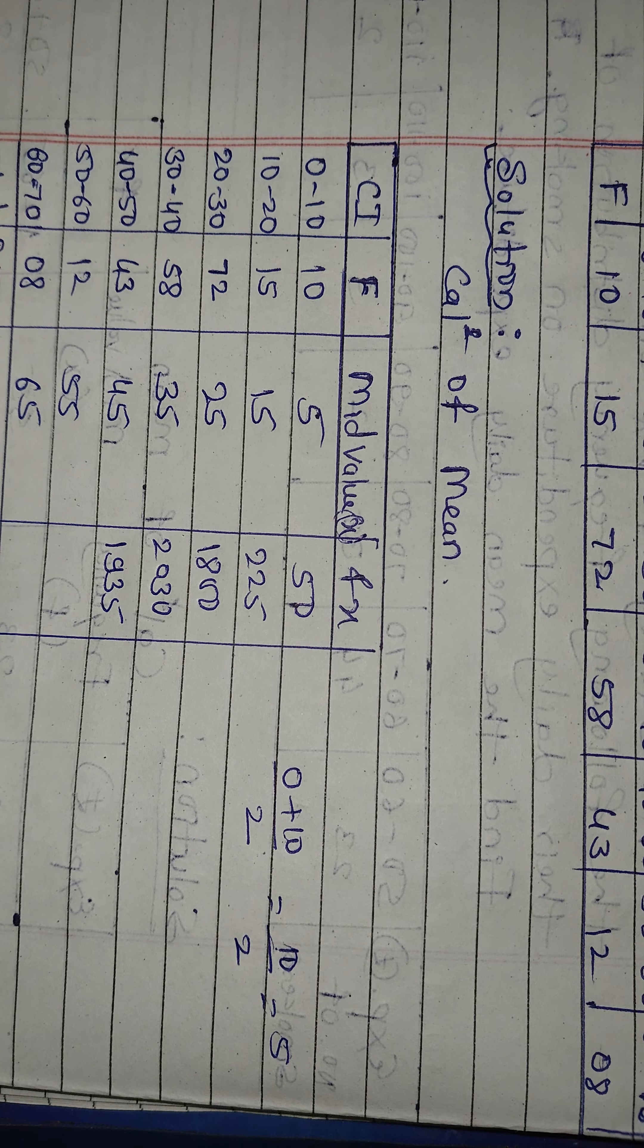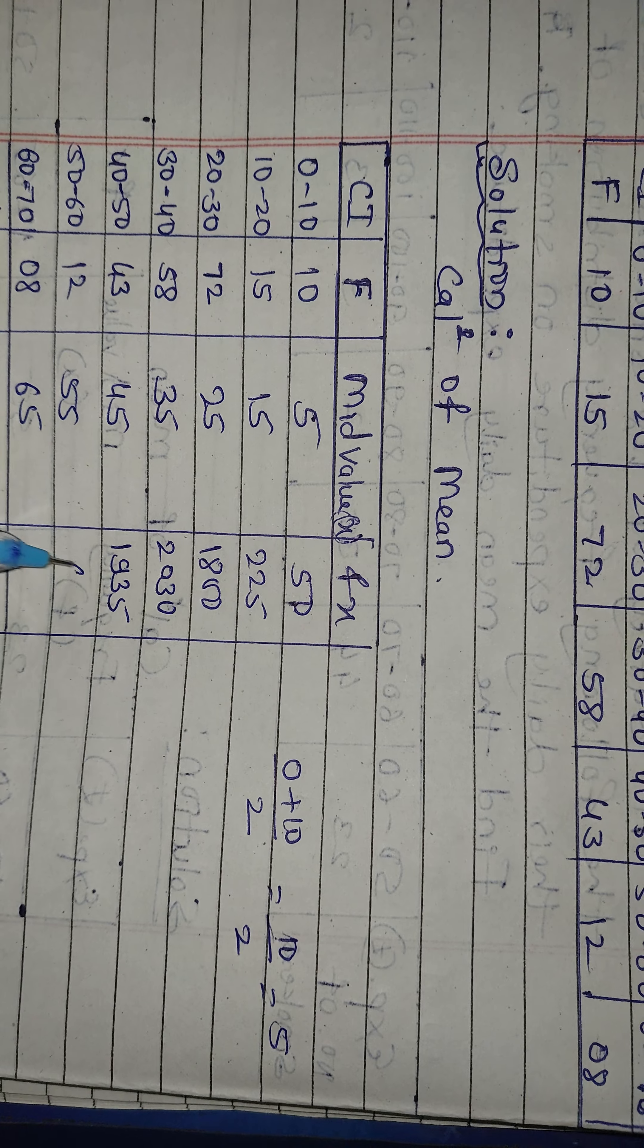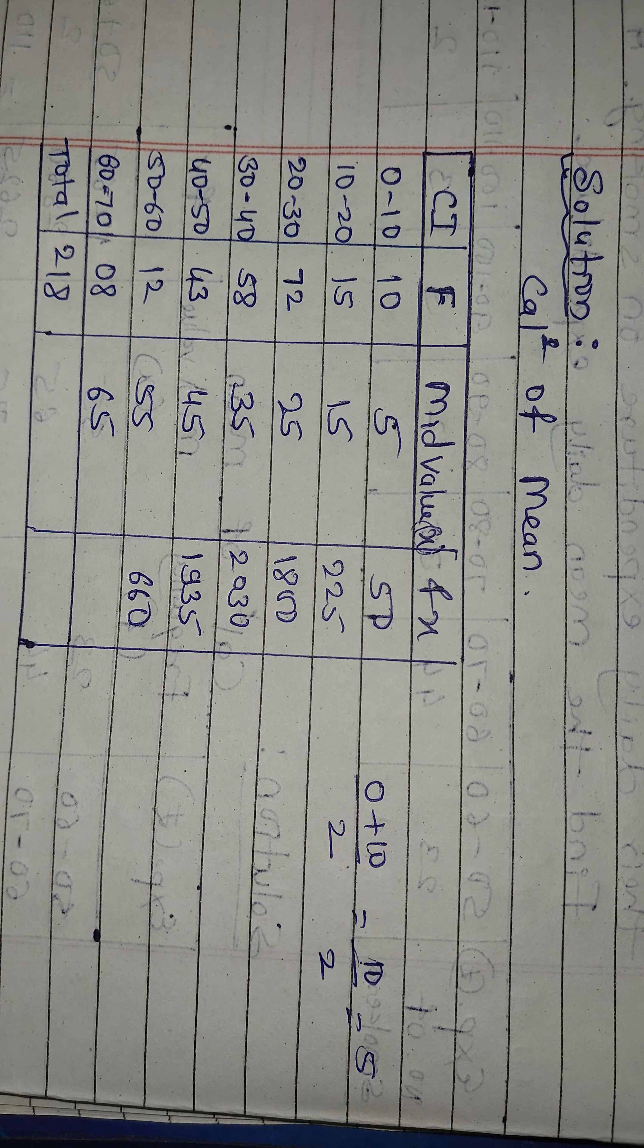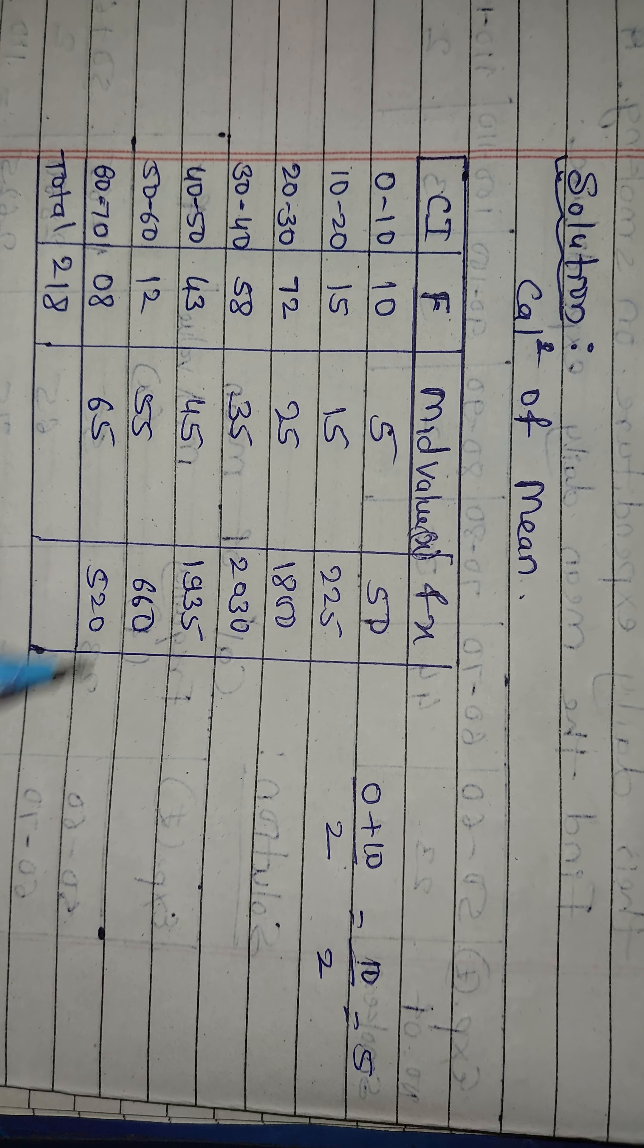Next, 43 into 45, that is 1935. Next, 55 into 12, that is 660. Next, 65 into 8, here we get 520 value.